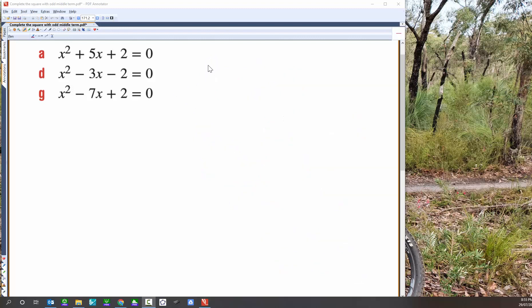And let's have a look at this last one here. So again, very similar process. x squared takes 7x, no, not 7x, plus 2 equals 0.